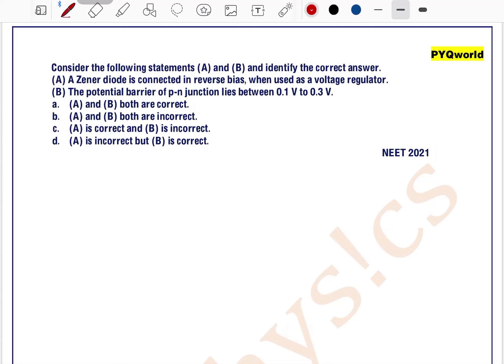Consider the following statements A and B and identify the correct answer. Statement A: A Zener diode is connected in reverse bias when used as a voltage regulator.